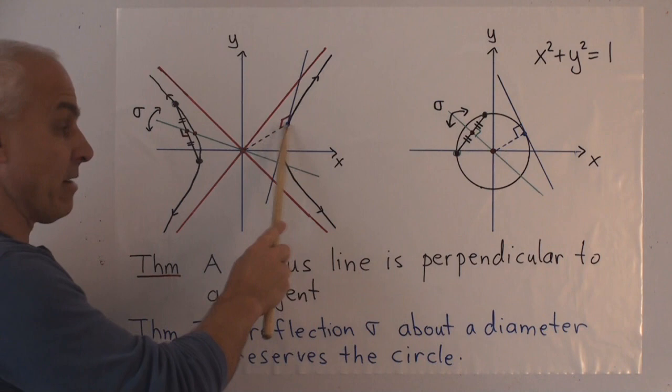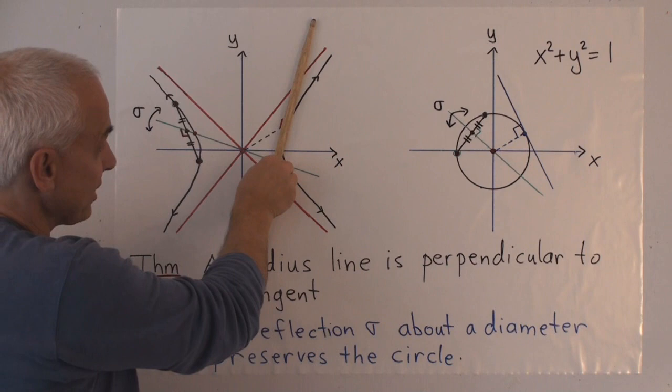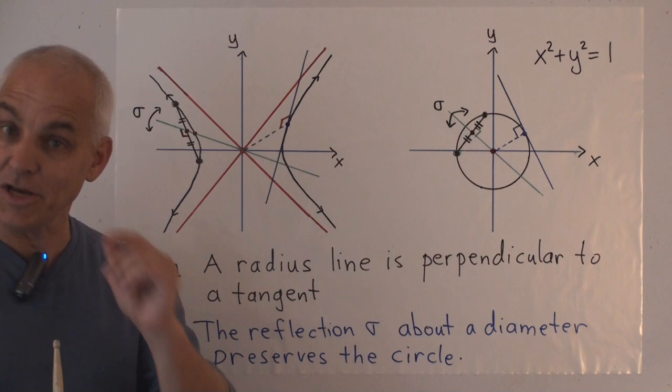So let's see if that's going to be true over here. So there's the center of our hyperbola. There's a random point on the hyperbola. There's the radial line, the radius. And here's the tangent to the hyperbola through our point. Is it true that this is perpendicular to this?